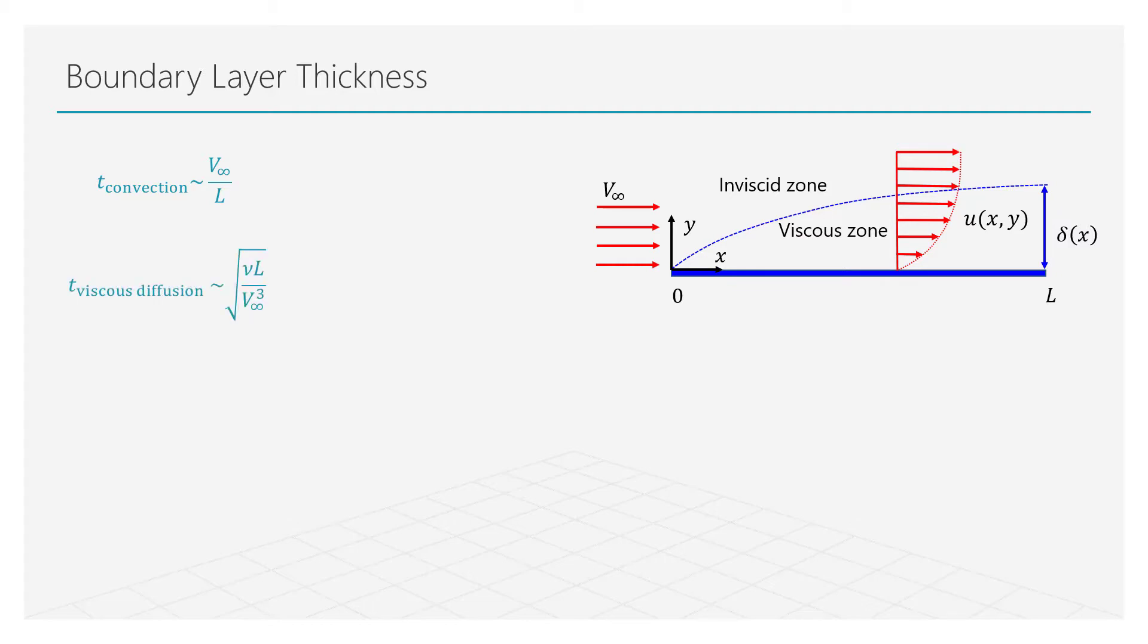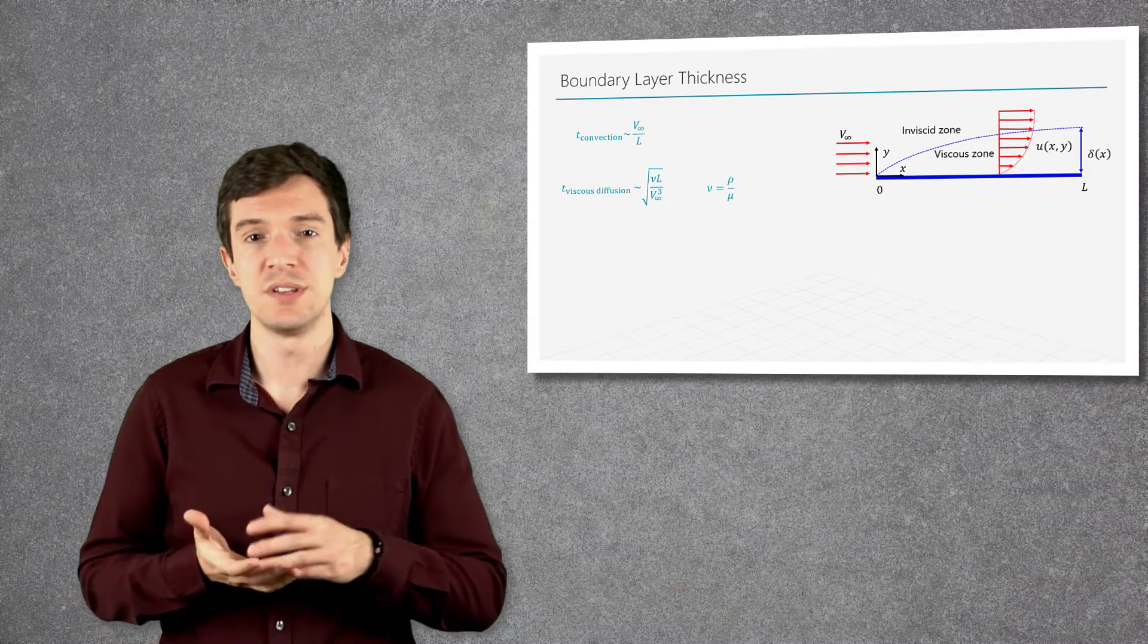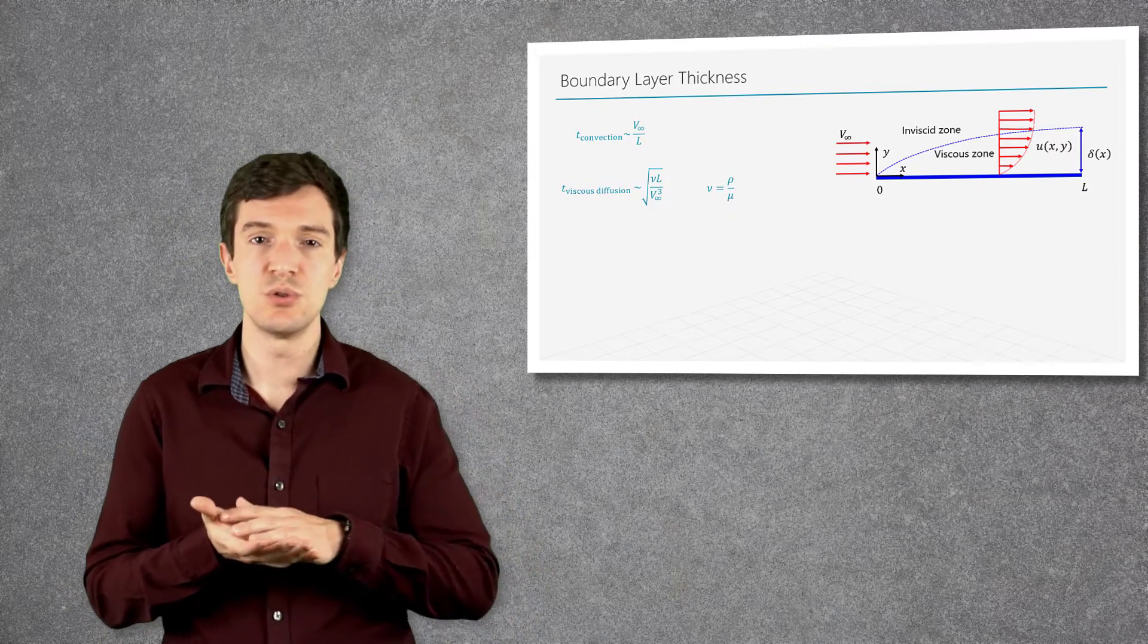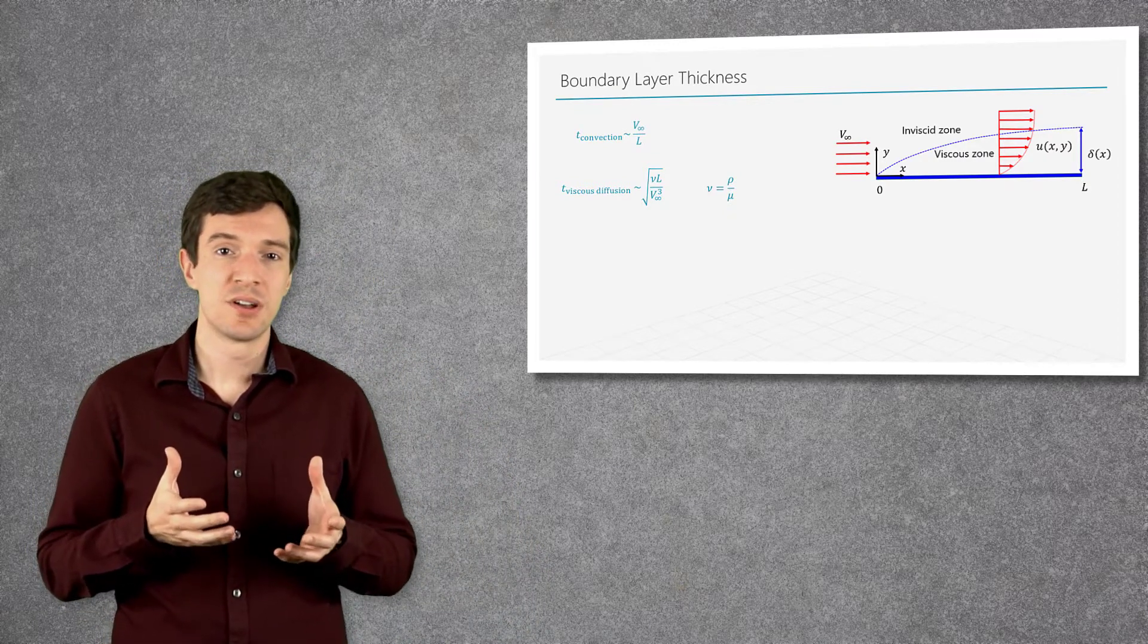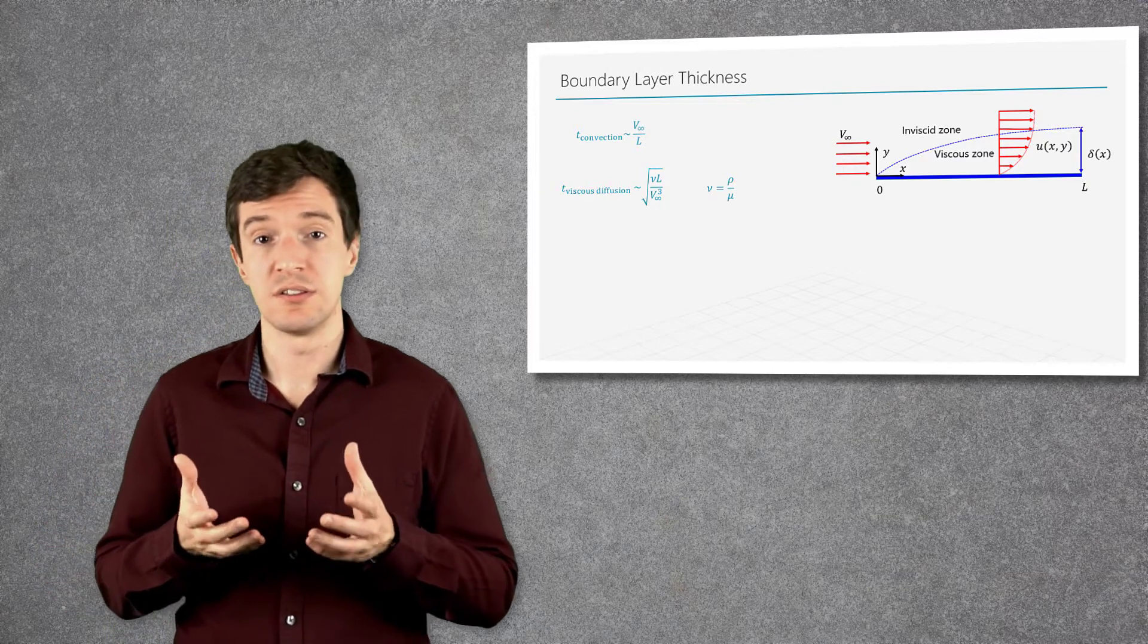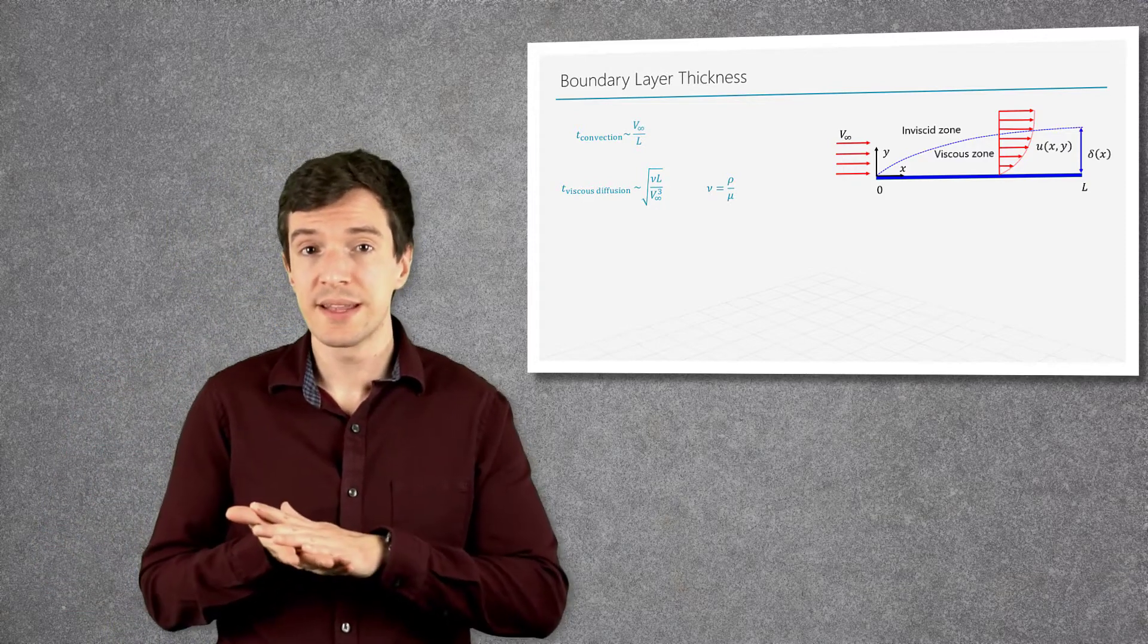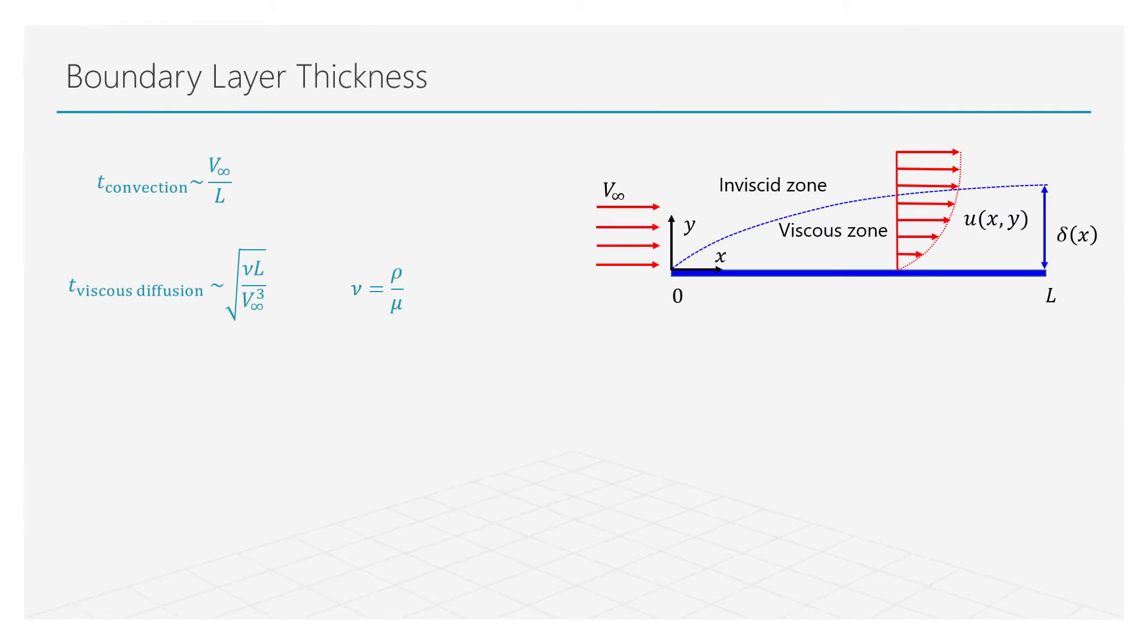The second time scale is connected to the viscous diffusion that represents how the viscous effects diffuse normal to the wall, namely the time for the momentum defect to propagate normal to the wall. For a boundary layer to be thin, the convection time scale must be much larger than the viscous diffusion time scale.